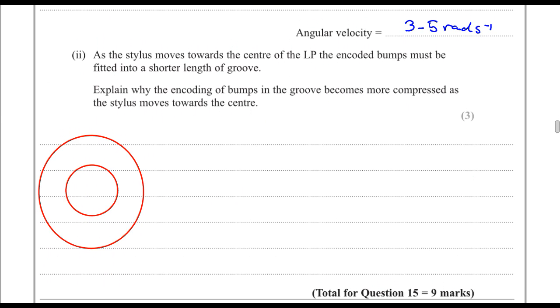We can look at two concentric circles with different radii. So that this is the path that the stylus follows outside the LP, and this is when it has moved towards the inside.